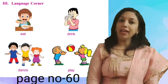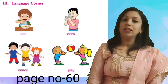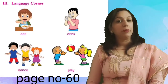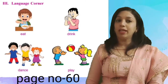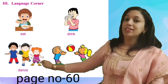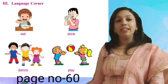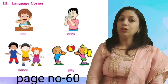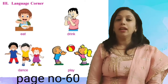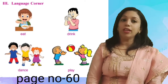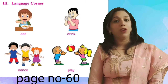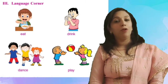Clap and jump are actions. Look at these pictures. These pictures show the action. Children, eat, drink, dance and play. These are given on your book page number 60. Children, there are many more actions. Today, we will learn these actions one by one with the help of pictures.